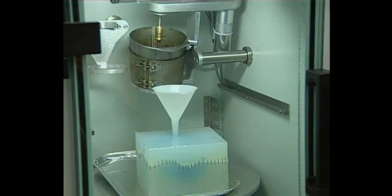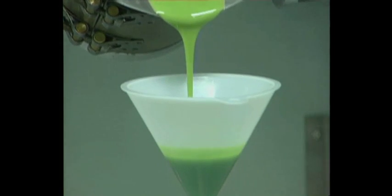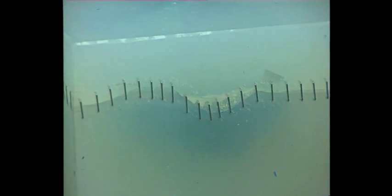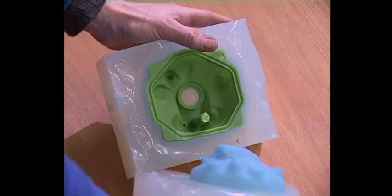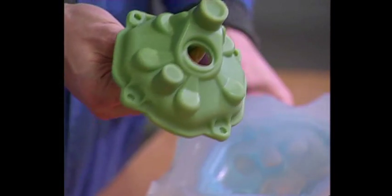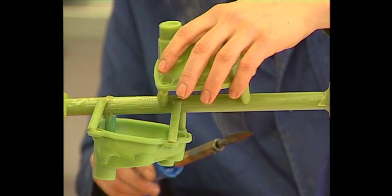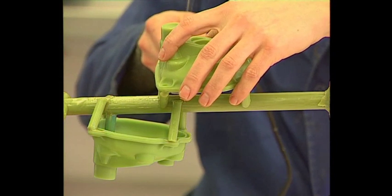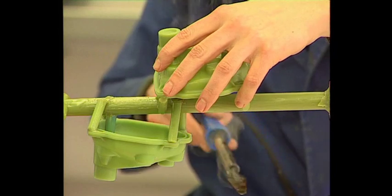Like conventional investment casting, the cyclone technology also starts the process with the production of the wax model. This can be done by means of standard investment casting wax, with a processing temperature of about 70-80 degrees Celsius. Several of these wax models are fixed to the so-called trunk to build a wax tree. The usable length of the trunk, as well as the maximum diameter of the wax tree is 500 mm.